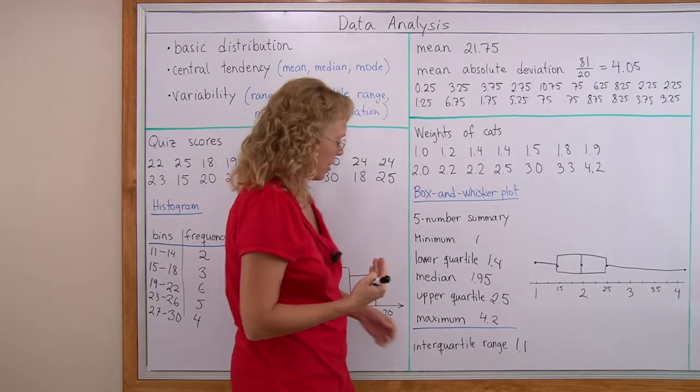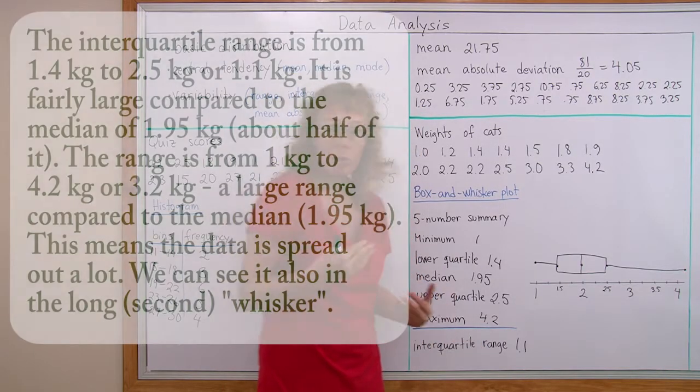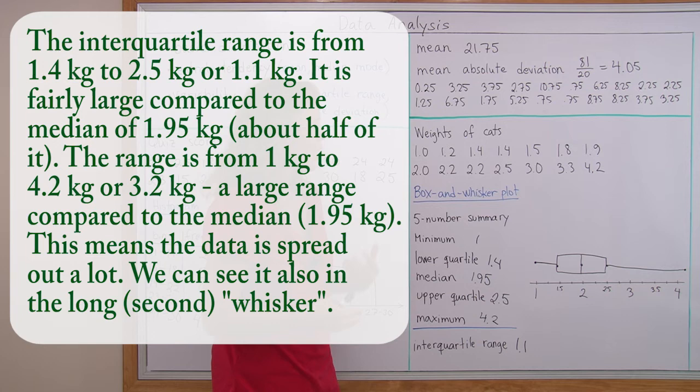And again, the interquartile range is from 1.4 kilograms to 2.5 kilograms, which means it is 1.1 kilograms, or the interval, the box is 1.1 kilograms long. This is fairly large compared to the median, which was 1.95 kilograms. It's about half of the median.